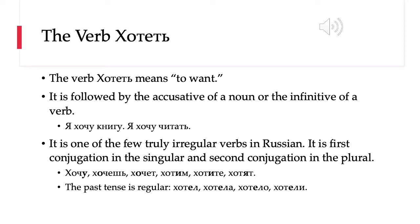We can see the paradigm here: я хочу; the т goes to ч, and then ты хочешь — we have the stress shift; она хочет. Then we go to the plural and all of a sudden we switch to second conjugation, and the stress shifts back onto the second syllable: мы хотим, вы хотите, они хотят. So this is very weird, and it's the only verb that does this exactly like this. It is truly irregular, and you just have to memorize the paradigm in order to use it correctly.